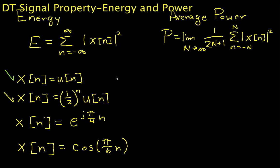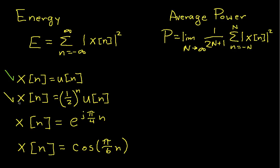Welcome to part two of this video in which we are computing the energy and power for discrete time signals. In part one, we went through x as the unit step function, and then we also went through the case where x is a decaying exponential that starts off with a value of 1 at time zero, and as n increases, it decreases by a factor of one-half each time.